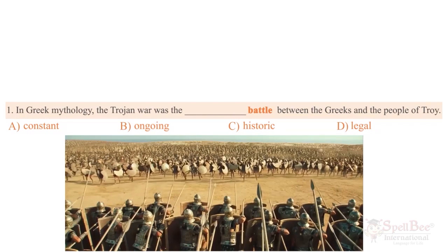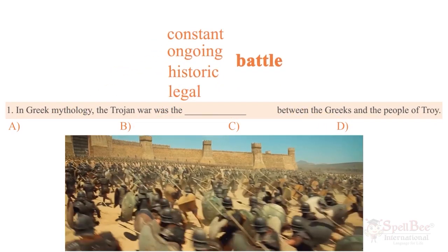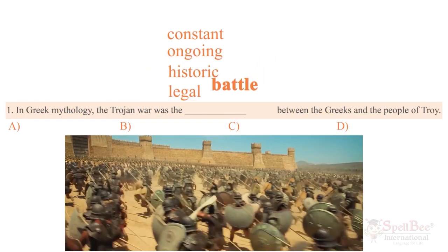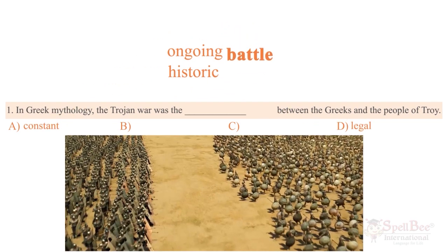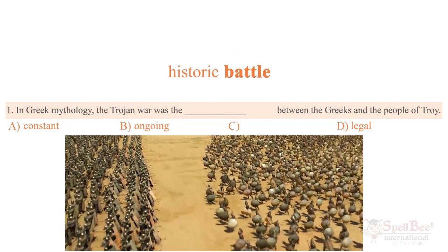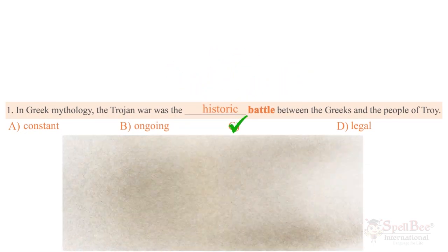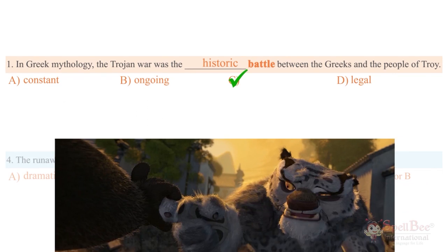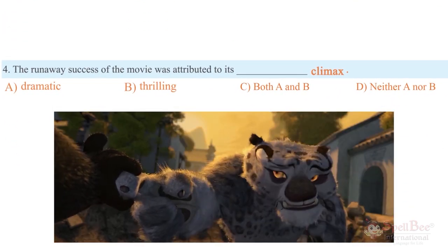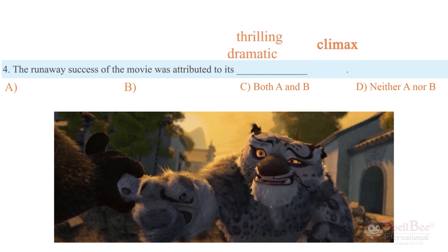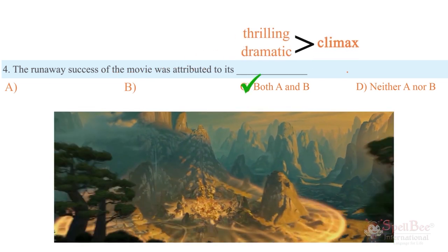Another exercise format is picking the most suitable word. In Greek mythology, the Trojan War — was it a legal, muttering, constant, or ongoing battle? No — it was the historic battle between the Greeks and the people of Troy. Similarly, 'the runaway success of the movie was attributed to its thrilling and dramatic climax' — both 'thrilling' and 'dramatic' are suitable collocates here.